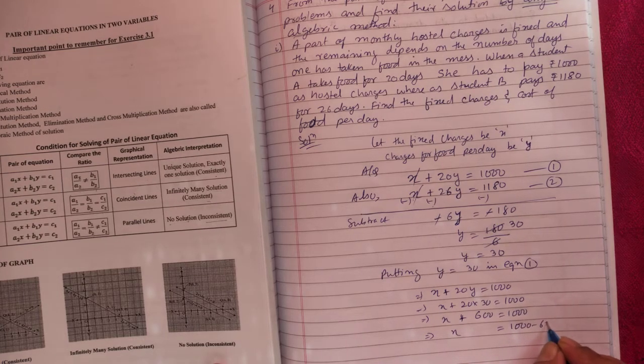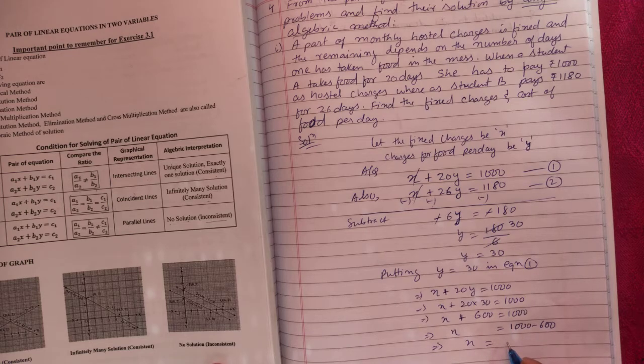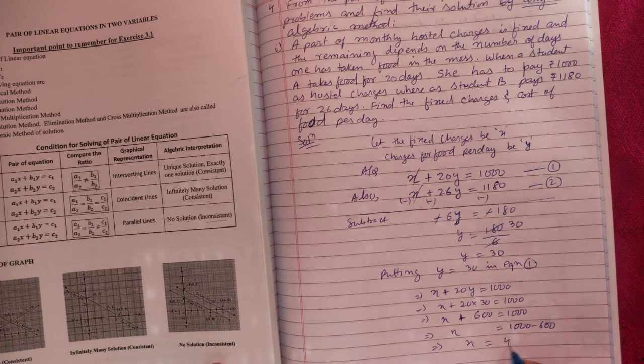So your fixed charge is 1000 minus 600, x equals 400.